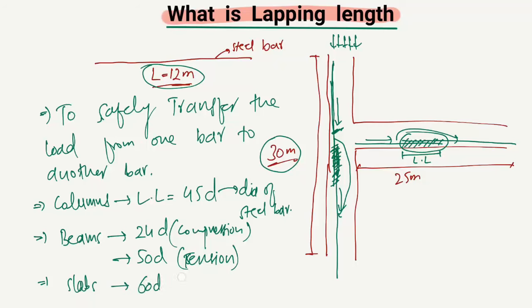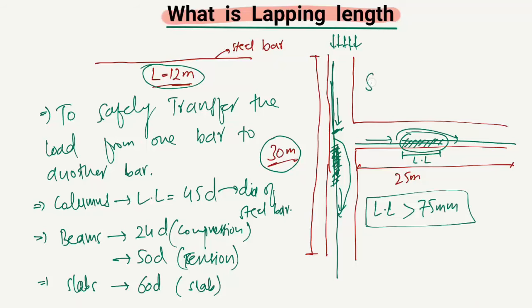For slabs, the overlapping length formula is equal to 60D, where D is the diameter of the bar. There are different formulas provided by codes for determining the overlapping length. It should also be kept in mind that the lapping length should never be less than 75 millimeters — it should always be greater than 75 millimeters. Hope you guys understand, and don't forget to subscribe to our channel. Thank you for watching.